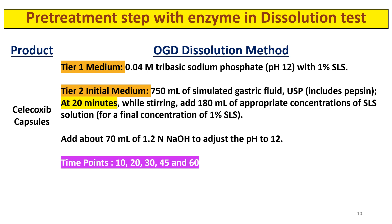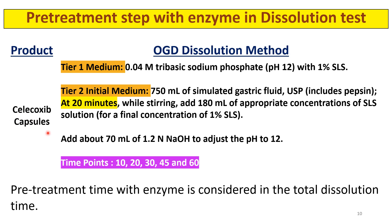An example of pre-treatment is celecoxib capsules. Tier 1 medium is 0.04 molar tribasic sodium phosphate, pH 12 with 1% SLS — this is a very insoluble molecule, which is why 1% SLS is used at pH 12. In Tier 2, initial medium of 750 ml simulated gastric fluid with pepsin is used, and pre-treatment is done for 20 minutes. While stirring, add 180 ml of appropriate concentration of SLS solution for a final concentration of 1% SLS.